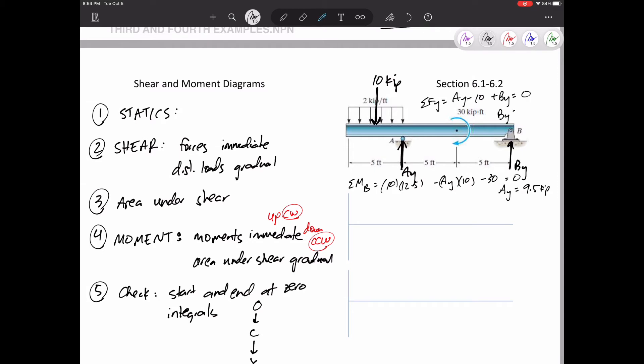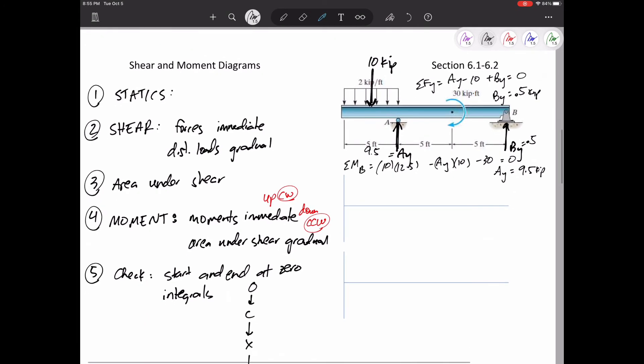So solve for AY, solve for BY, and go ahead and draw those. All right. Now I think I'm ready to hop on to my shear diagram. So I'm starting at zero, and then the first thing I see is not a concentrated load that pushes me up or down immediately. It's a distributed load, and it pushes me down gradually. It pushes me down by 10.